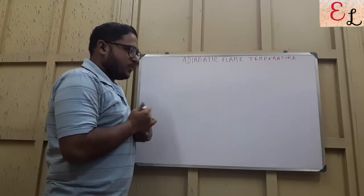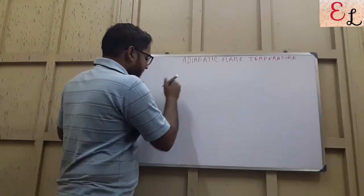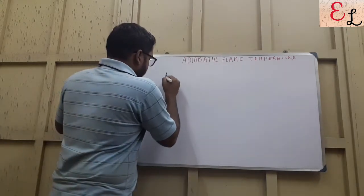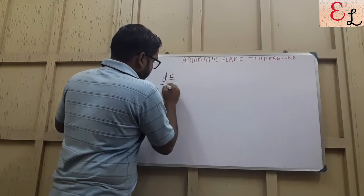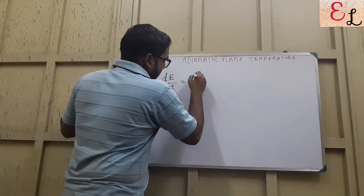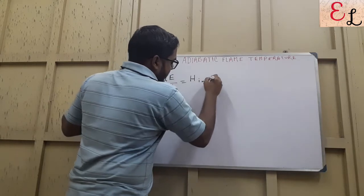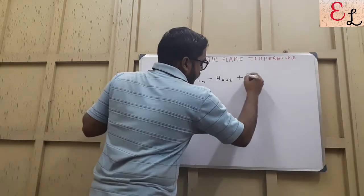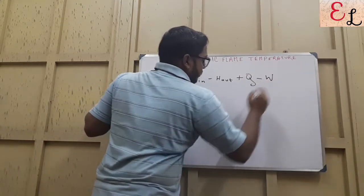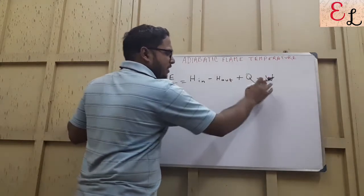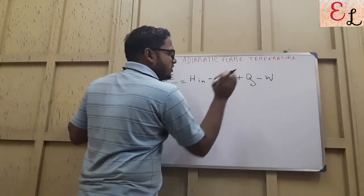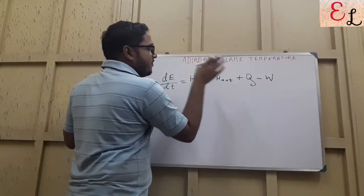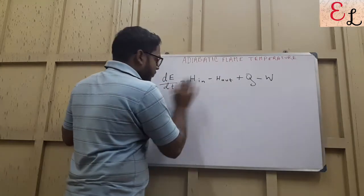So as the name suggests, first we would start by writing the energy balance equation. If we write the energy balance equation, we will see that dE/dt equals H_in minus H_out, that is the enthalpy difference, plus Q minus W. This W contains shaft work, electrical work and other work, and Q is basically the heat exchange throughout the process. So as the name suggests, this is the adiabatic flame temperature, so it's an adiabatic process that's taking place.